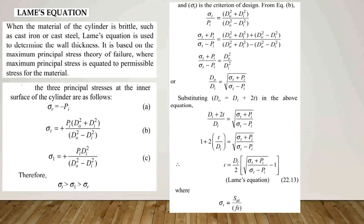Now we see Lame's equation, which is used to determine the wall thickness T. Lame's equation is used for brittle cylinder materials such as cast iron or cast steel. This equation is based on the maximum principal stress theory of failure, where the maximum principal stress is equated to the permissible stress for the material.